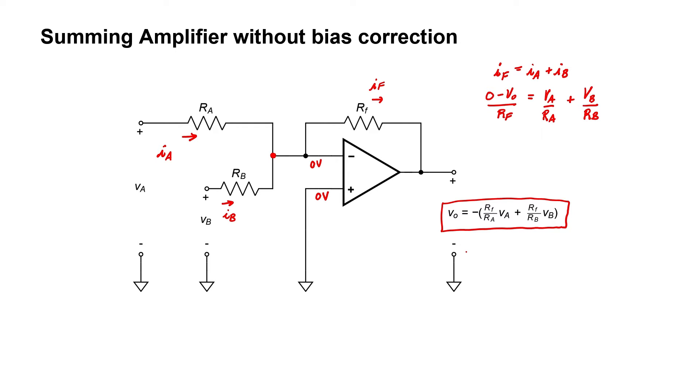Although the summing amplifier that I've shown here only has two inputs, V sub A and V sub B, I hope you can realize by glancing at the circuit that you could have many more inputs, and the circuit would simply take the sum of all of them.